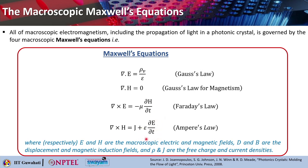You can also write Maxwell-Ampere law using the displacement field D. Here E and H are the macroscopic electric and magnetic fields, while capital D and B are the displacement and the magnetic induction fields. Rho and J are the free charge and the current densities.